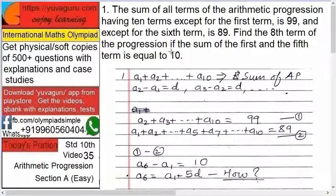Here three conditions are given. First is except the first term, second is except the sixth term, and third is the sum of the first and the fifth term is 10.